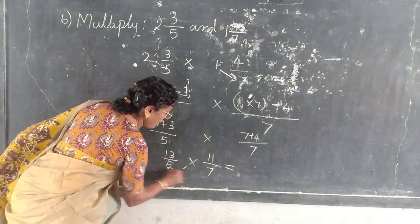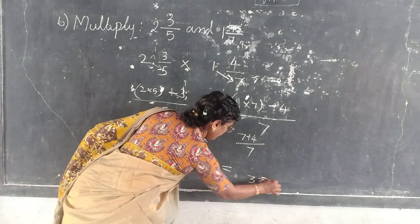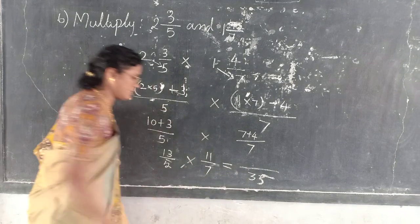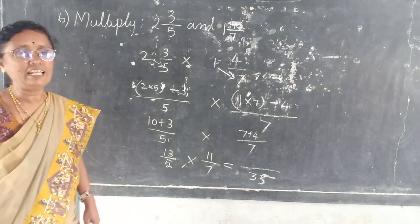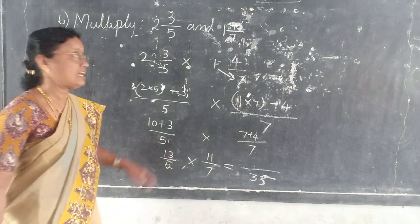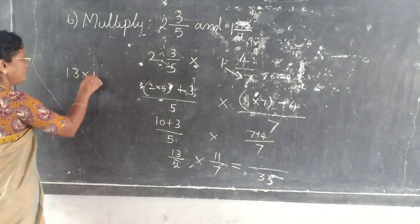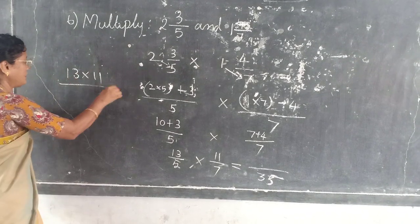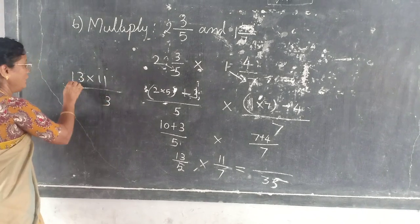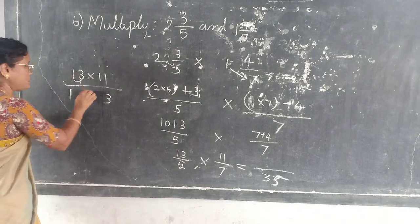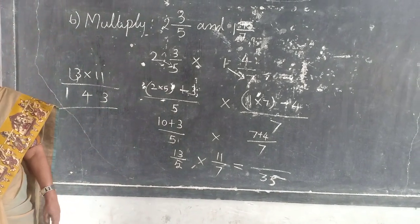So 5 times 7 are 35. 13 into 11. There is an easy way to multiply by 11. 11 into 13. What is here? 1. What is here? 3. You have to add this number. 1 plus 3 is 4. So 143. Do you follow?